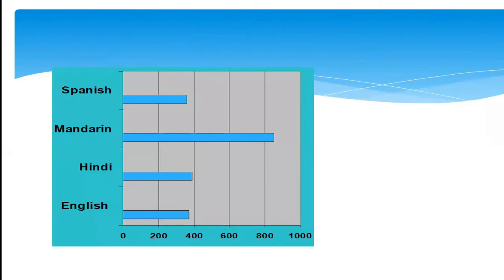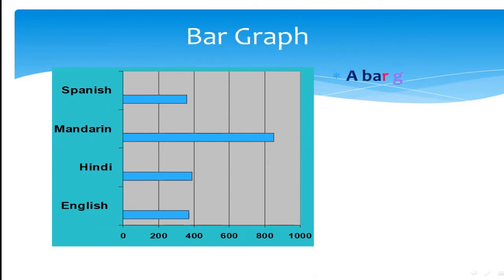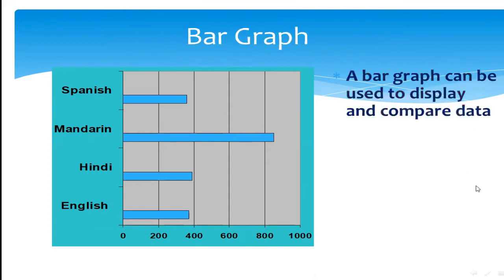Look at this — this is a bar graph. You can see there are different languages written here: English, Hindi, Spanish, Mandarin. You can write any language you want. According to the language spoken, the data is drawn in the form of a bar — that's what we call a bar graph.